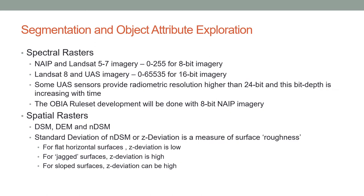We will also be looking at spatial rasters — data or surfaces derived from the LiDAR data — specifically the digital surface model, the digital elevation model, and the NDSM, the normalized digital surface model. The NDSM will give you the heights from the ground. A very important metric is the standard deviation of the NDSM, also known as the Z-deviation. This is a measure of surface roughness: if you have a flat horizontal surface, the standard deviation of the elevation is very low, meaning the scatter of the LiDAR points is in a very tight peak about the surface.